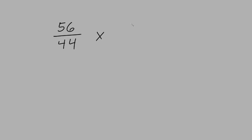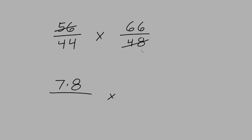Let's say we had a question like 56 over 44 multiplied by 66 over 48. If we look for common factors in the numerators and denominators, we can see that 56 and 48 are both divisible by 8. So 56 can be 7 times 8 and 48 can be 6 times 8. And 44 and 66 are both divisible by 11, so 44 can be 4 times 11 and 66 can be 6 times 11.